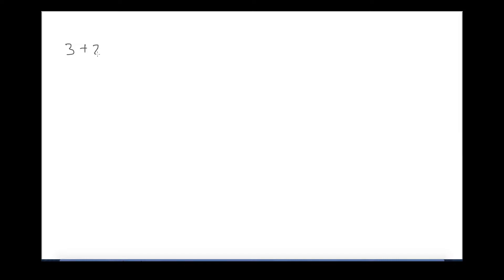A maths question can include a mixture of operations. In this example: 3 plus 22 times 3 subtract 14. We've got addition, multiplication, and subtraction. You might think a good way to do this is starting from the left and working to the right, but in maths not all operations are equal — you have to do them in a particular order. In this example, you would start with the multiplication first, as it takes priority over addition and subtraction.